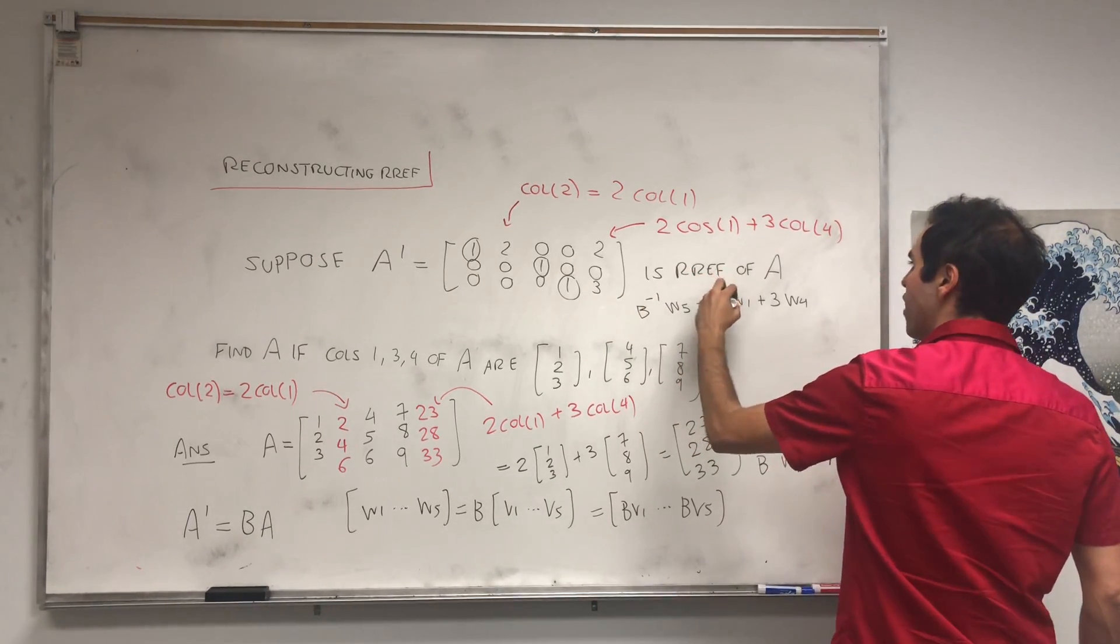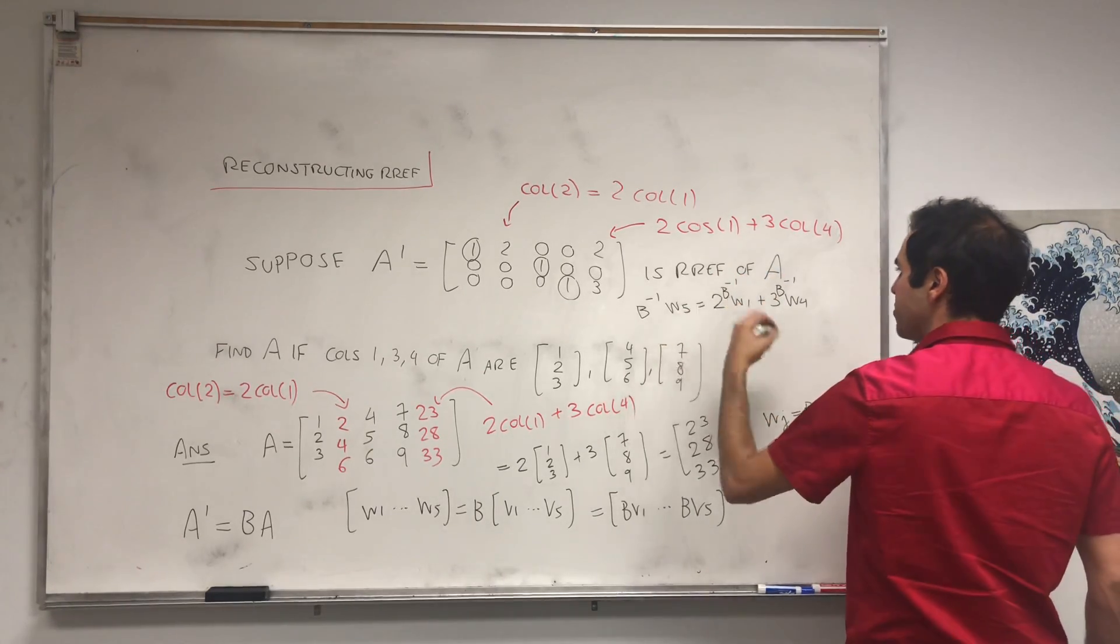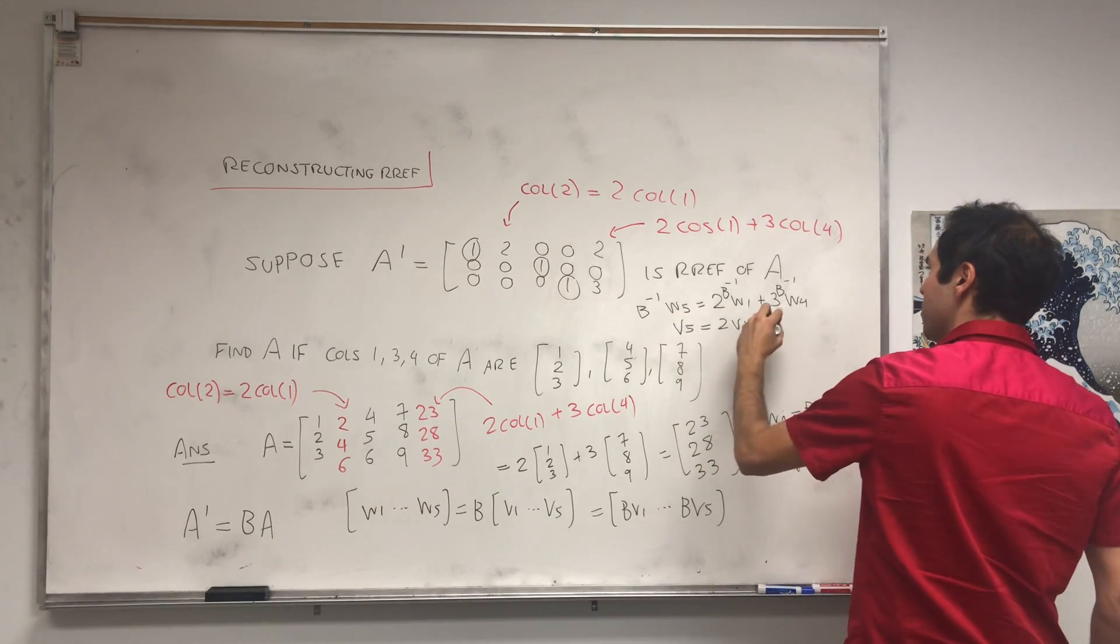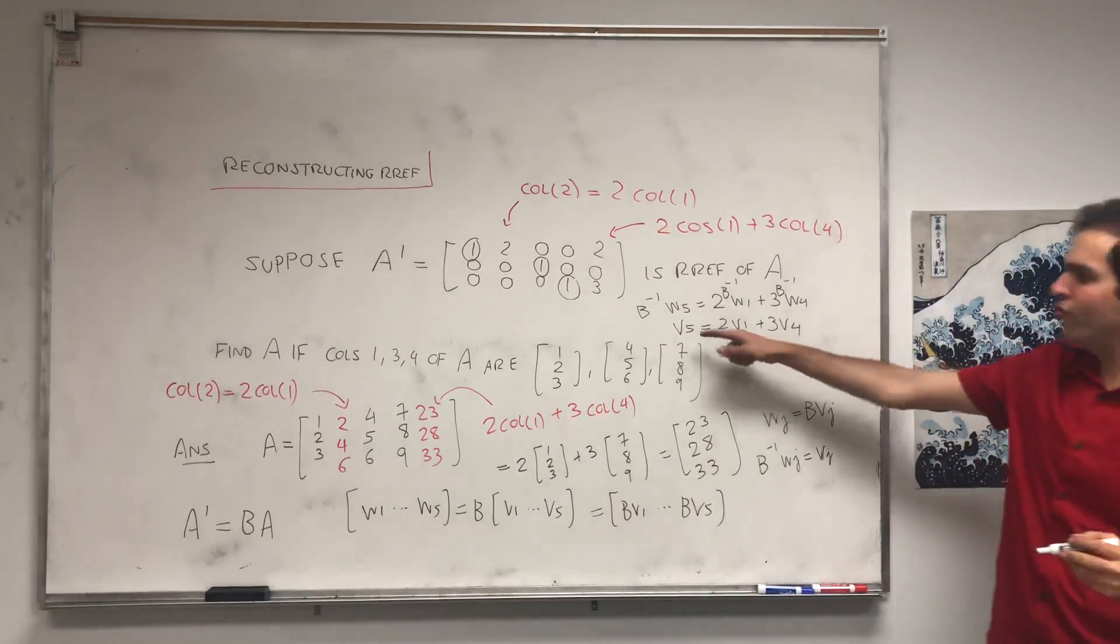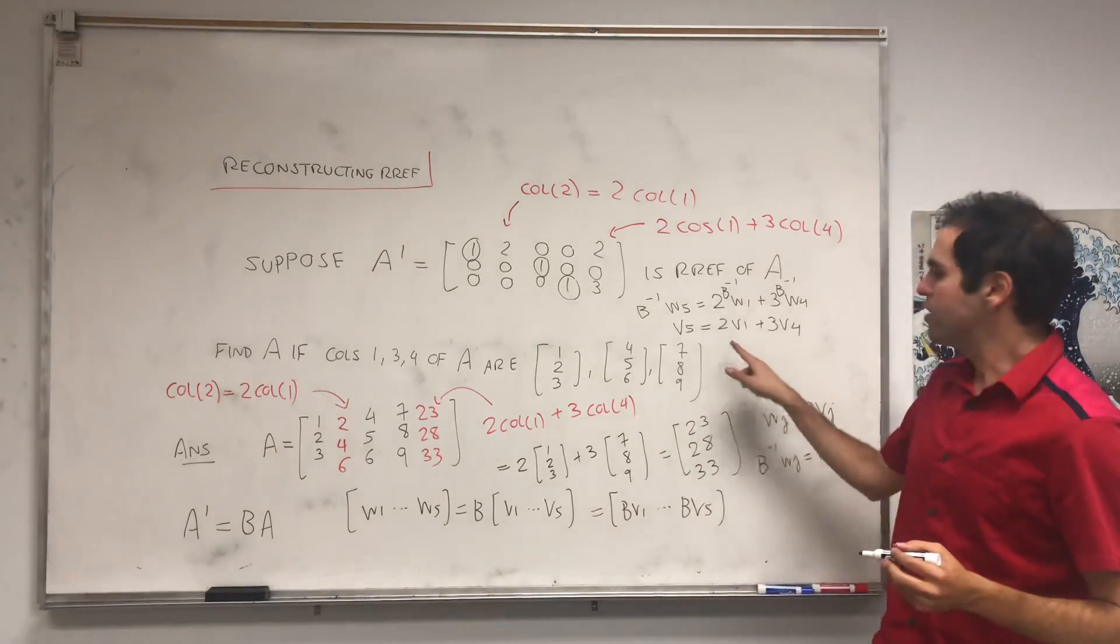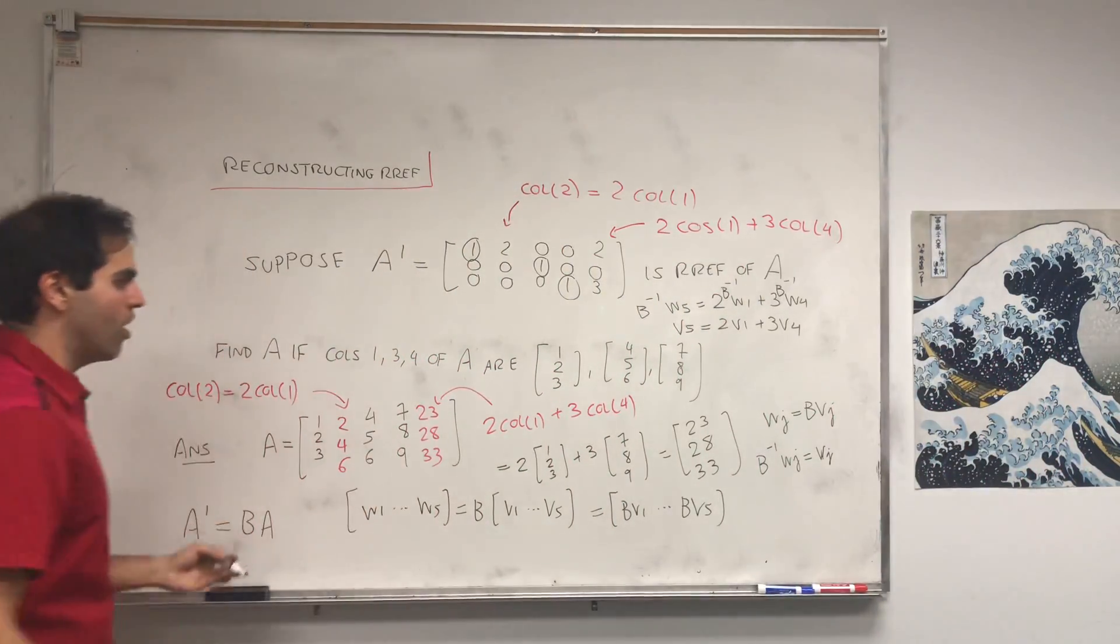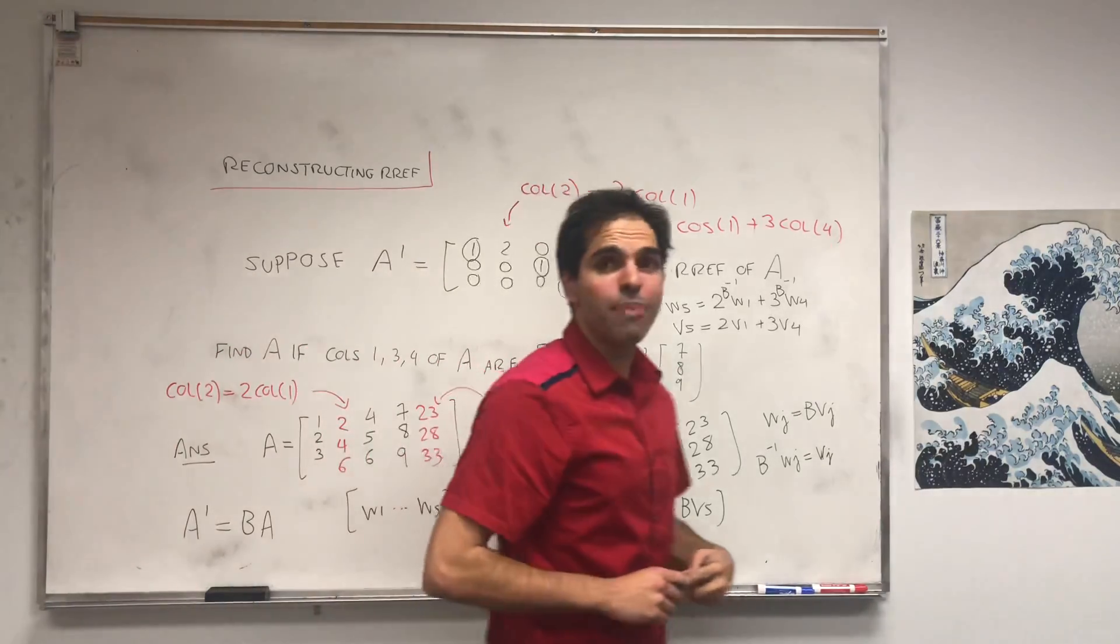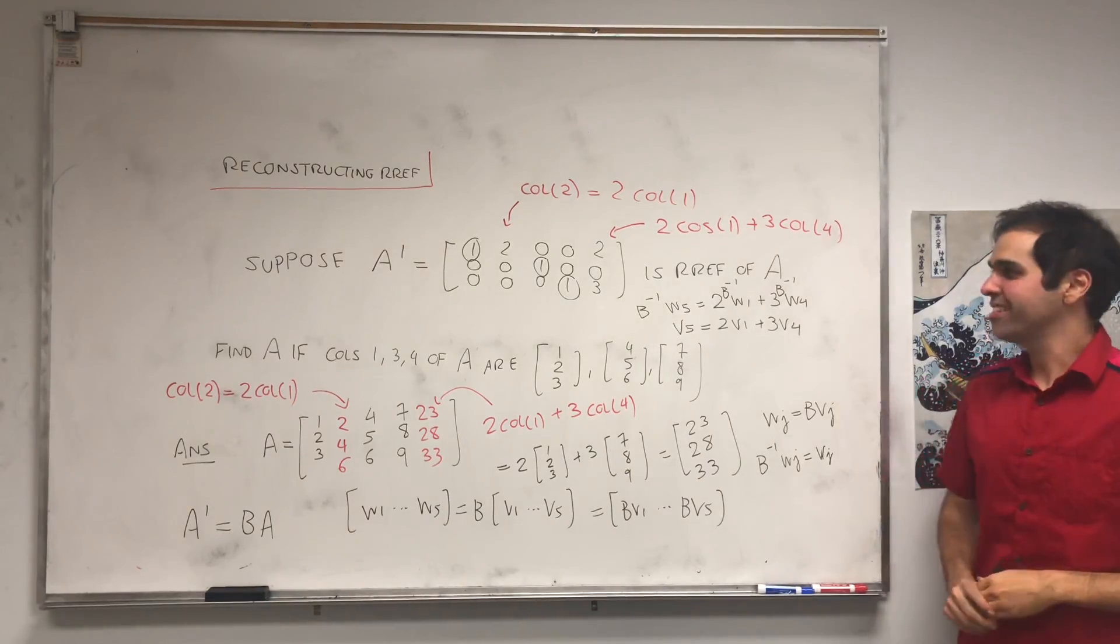And so if you do B inverse on both sides, you get B inverse of W5 is two times B inverse W1 plus three times B inverse W4, so V5 is two V1 plus three V4. So in particular, the fifth column of A, which is V5, is two times the first column plus three times the fourth column. So this is why linear dependence relations are preserved, and this is what makes the reduced row echelon form so nice.